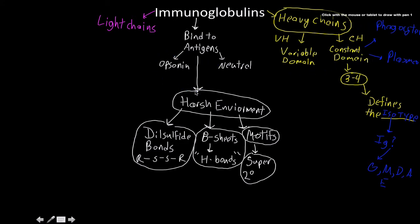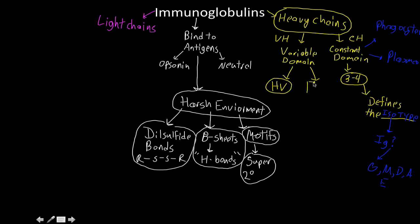For the heavy chains, within the variable domain there are two sub-classifications: the hypervariable regions (HV) and the framework regions (FR). HV means hypervariable, FR means framework region.